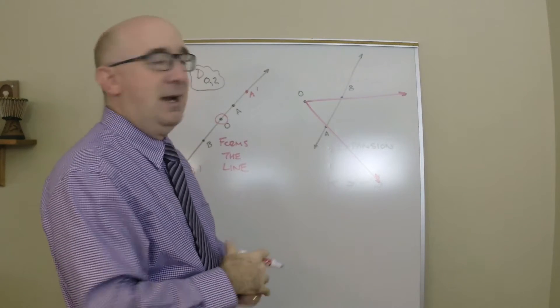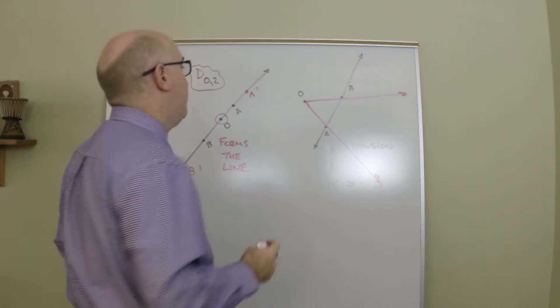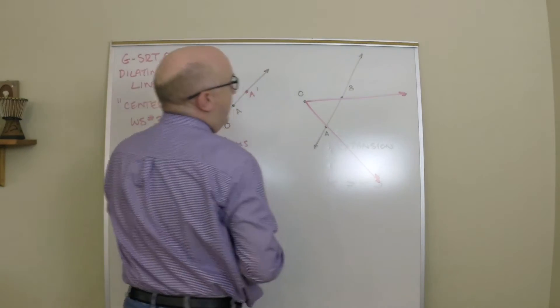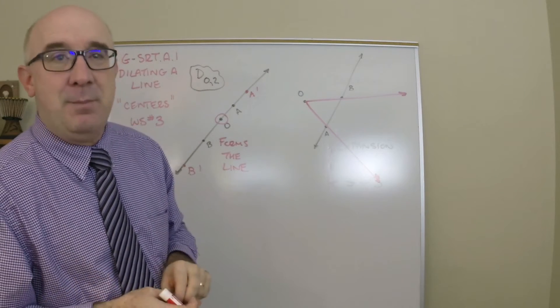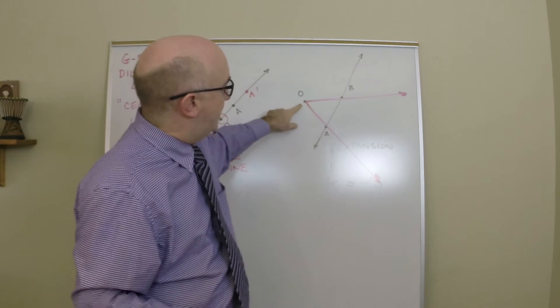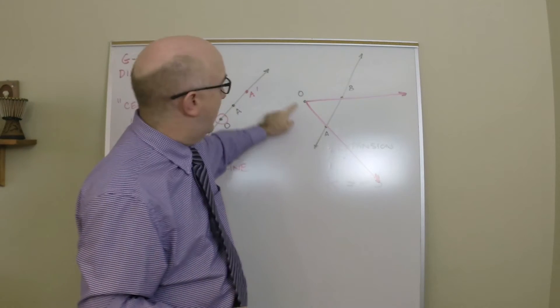And then let's say we were dilating it by two. Everything gets doubled. Now the line is not getting doubled, but the points are getting pushed further away, twice the distance away.